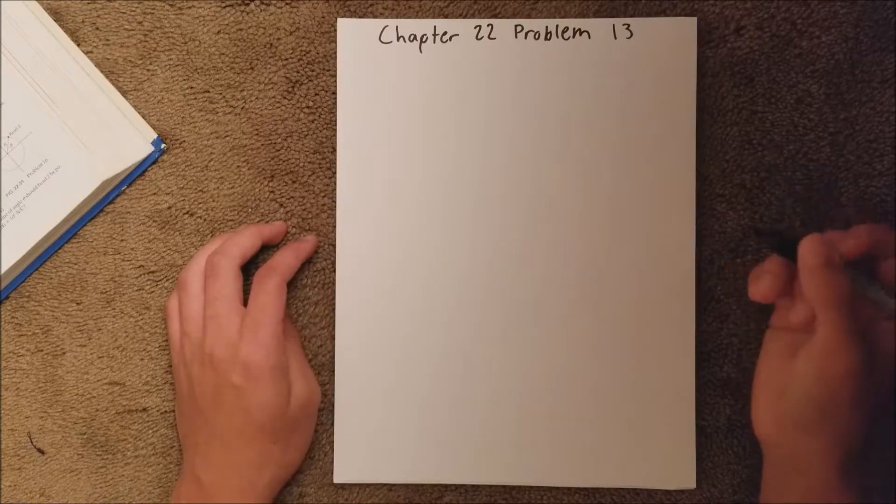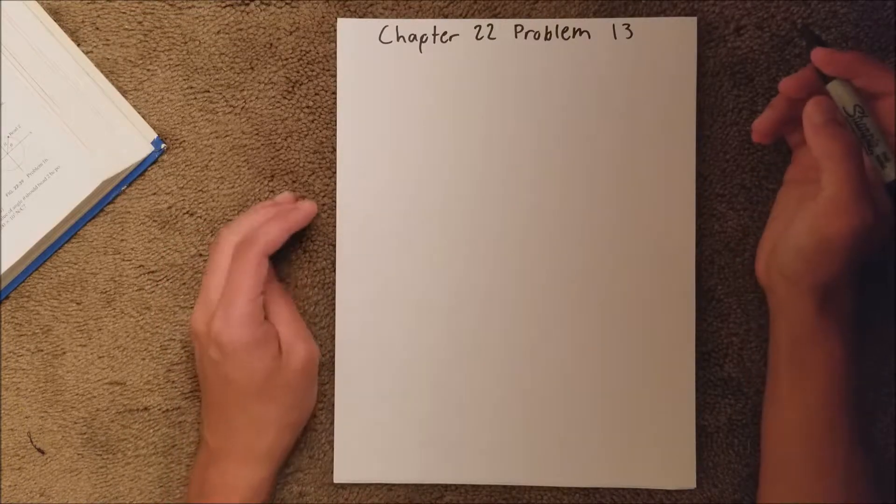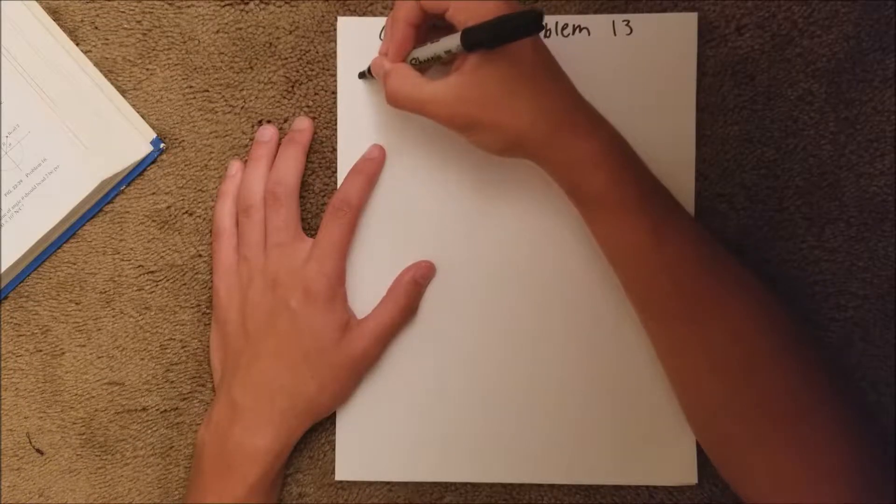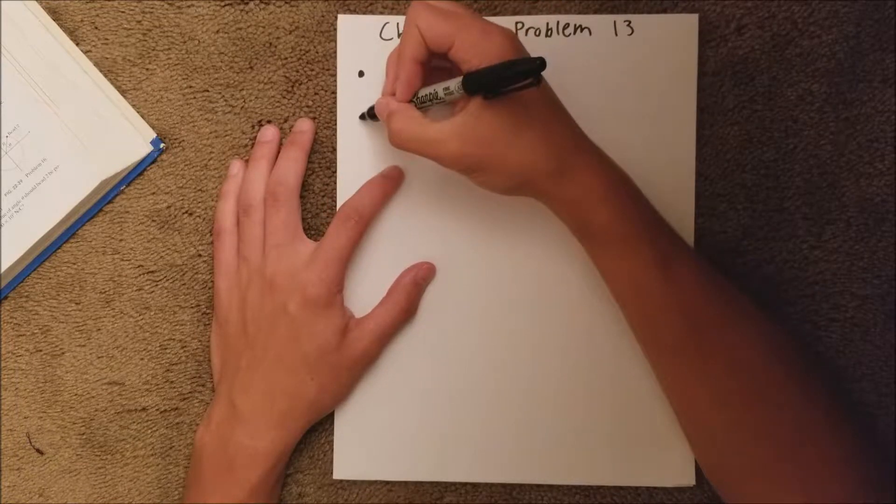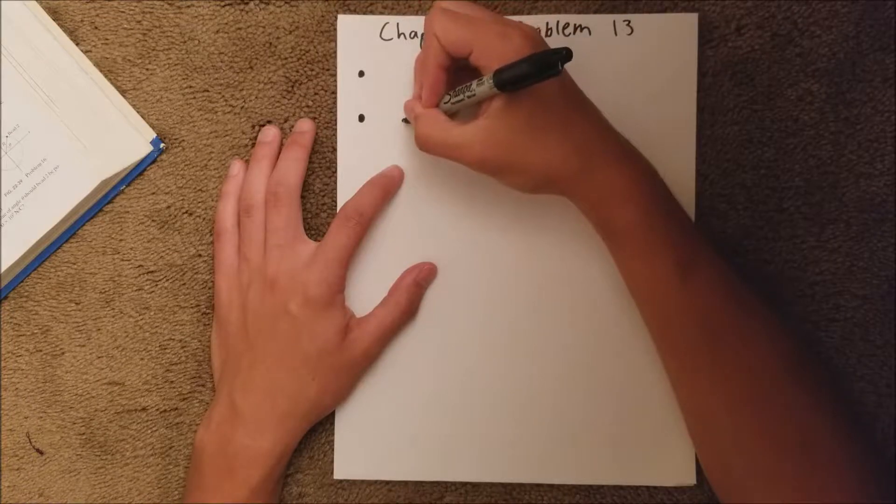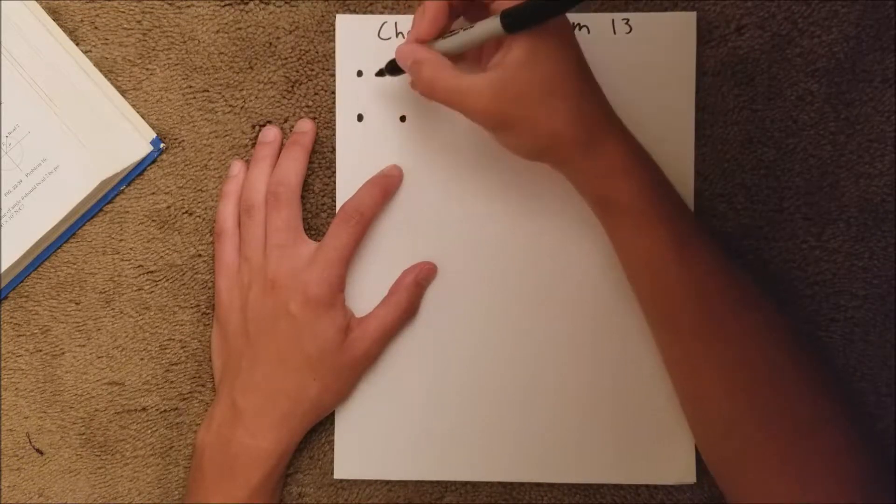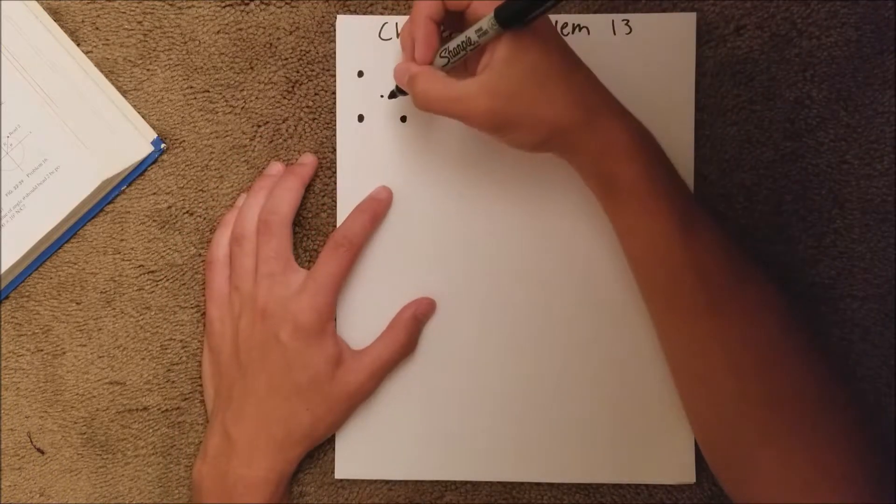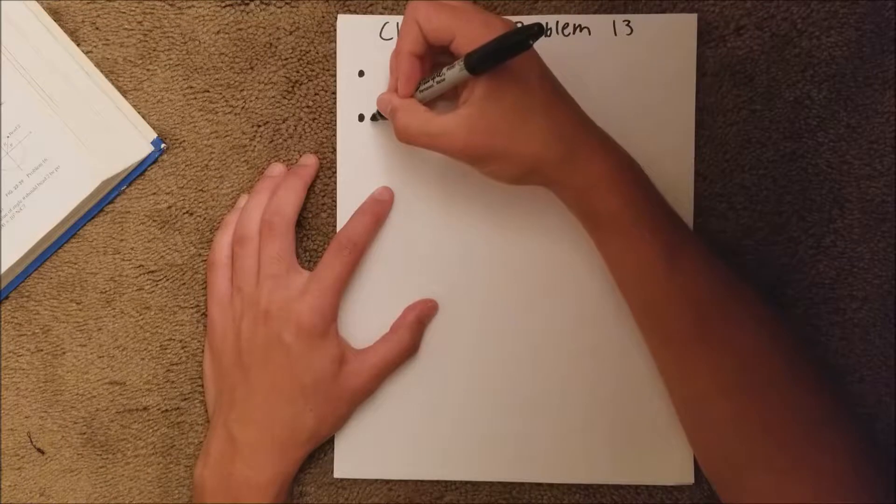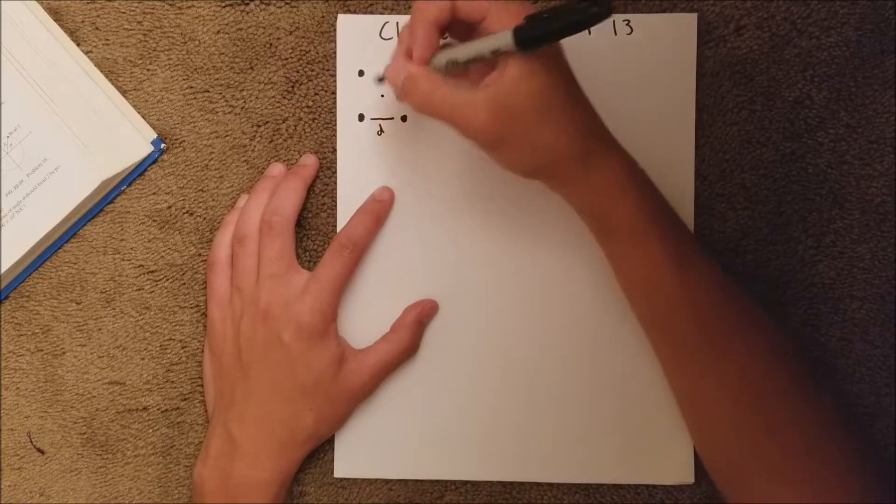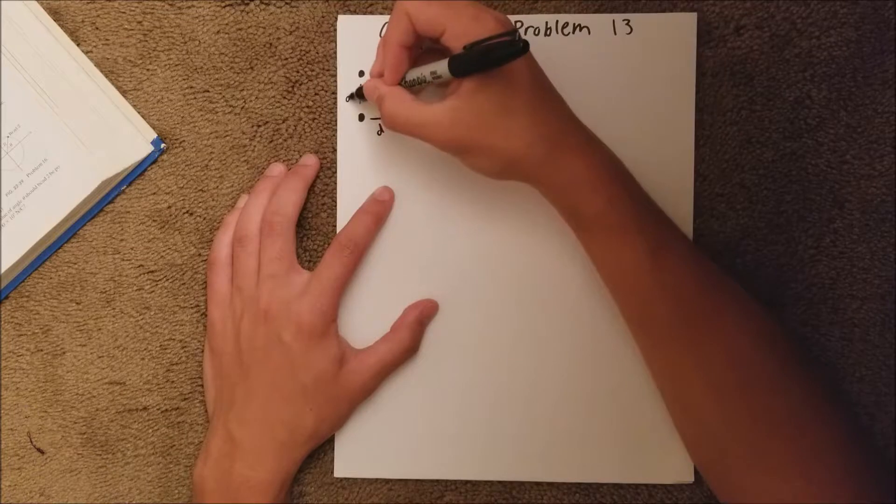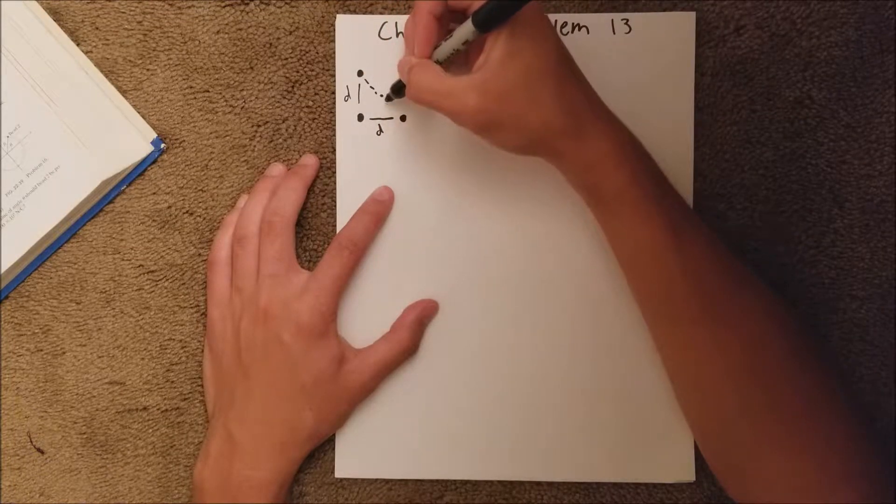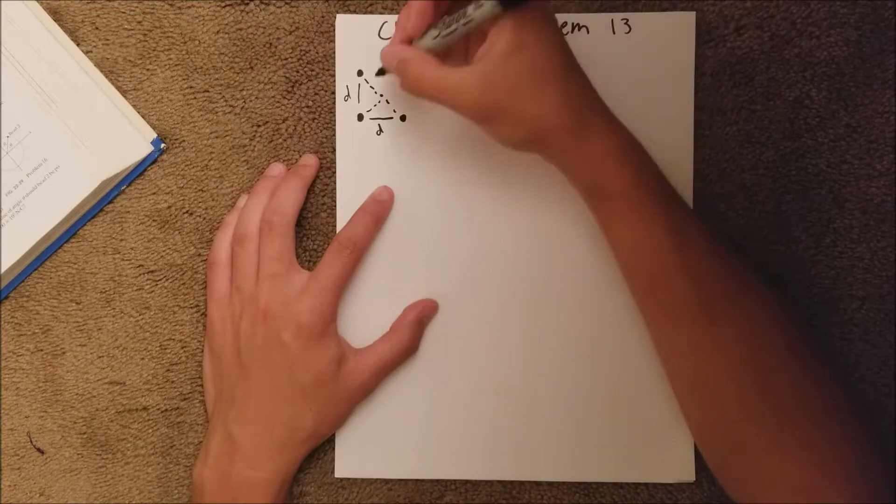And chapter 13, we are actually given a figure that looks similar to this one. So we have a charged particle here, here, and here. And we have a point here in the middle. And we'll call this distance here distance D. We'll call that same distance. And these two are equal distance, and we'll call this just point one.